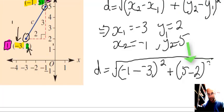So x2 minus x1 is negative 1 minus negative 3 and that gets squared, plus y2 which is 5 minus 2 and that's squared. Work out what's inside the brackets first before you square it.